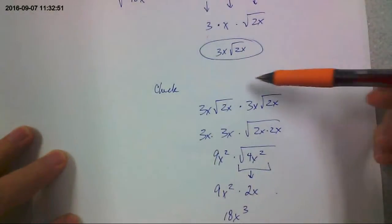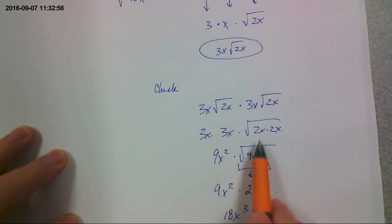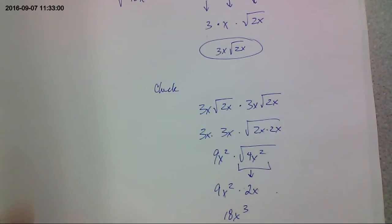If you wanted to check it, you take it and you multiply it by itself. 3x times 3x is 9x squared. That's square root of 2 times square root of 2x times x. Square root of 4 is 2. Square root of x squared is x. 18x cubed.